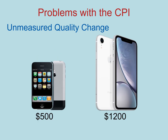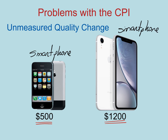The original iPhone came out with a sticker price of $500. This new iPhone came out recently with a price tag of $1,200. So if both of these are defined as a smartphone, then by comparing this one item on the basket of goods over time, we would say that there's been a very sharp increase in the price of smartphones — in this case, more than doubled. But is that actually true?